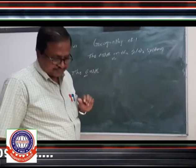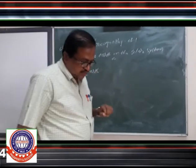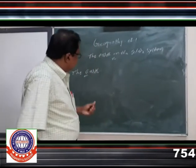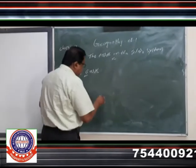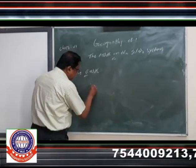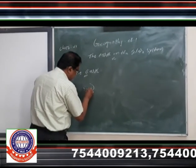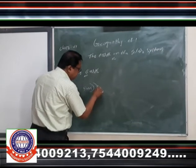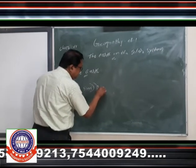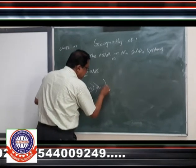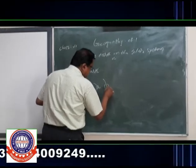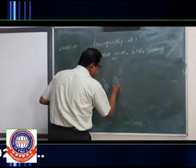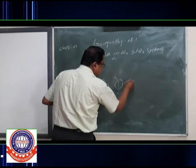Dwarf means Chhota. Now, the Earth. Remember, the order of planets from the Sun: the first one is Mercury, the second one is Venus, and the third one is our Earth.